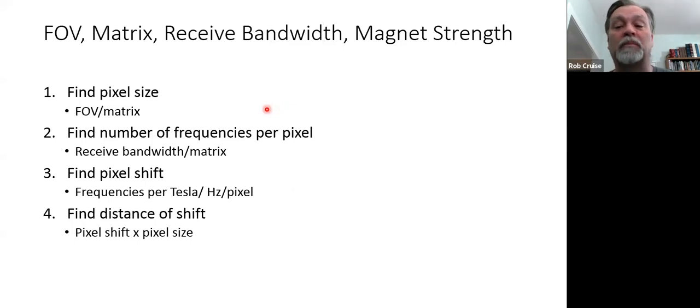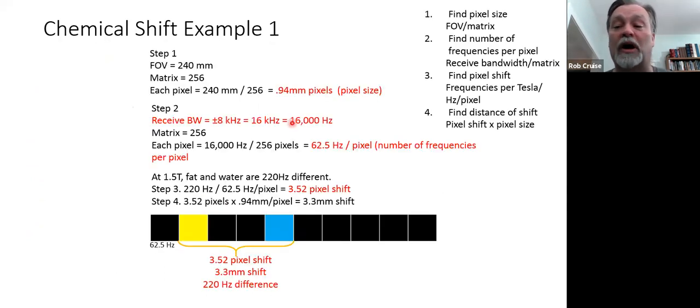Here is our formula that we're going to do, or the four-step process to find out all the information we can. It yields two different calculations: the frequencies per Tesla or Hertz, so that's how many pixels are shifted, and also the distance of the shift of anatomy that we are covering with the fat by being shifted over into the water frequencies, or mismapped rather. So I put this on each one, the four-step process.